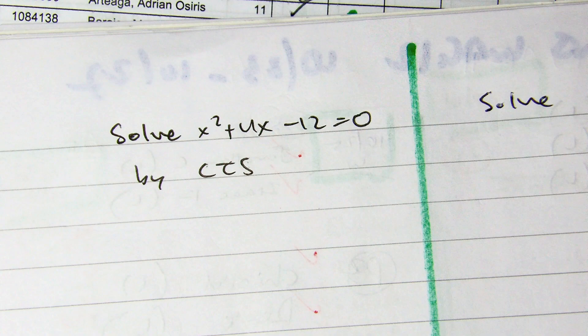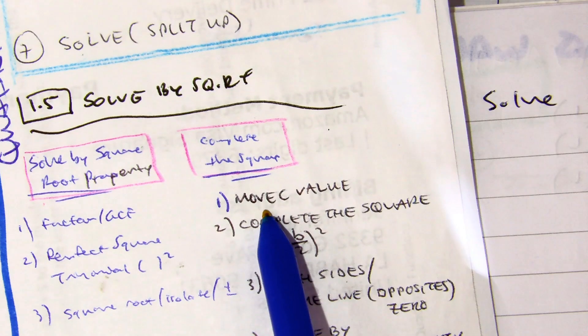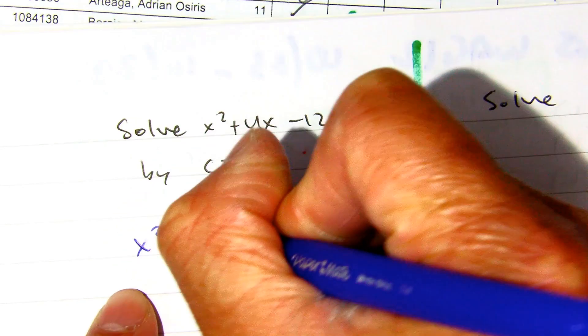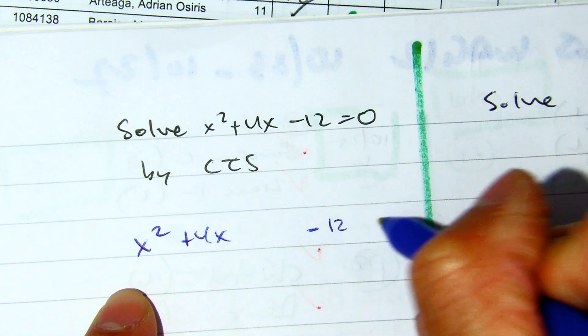I have my formula sheet here, and it's telling me the first thing I want to do is move the c value. x² + 4x, I'm just moving that negative 12 over there.